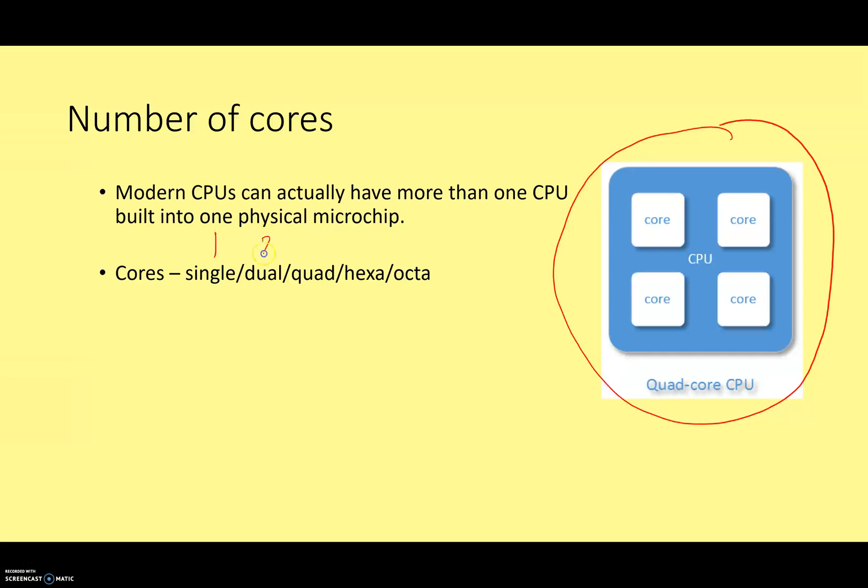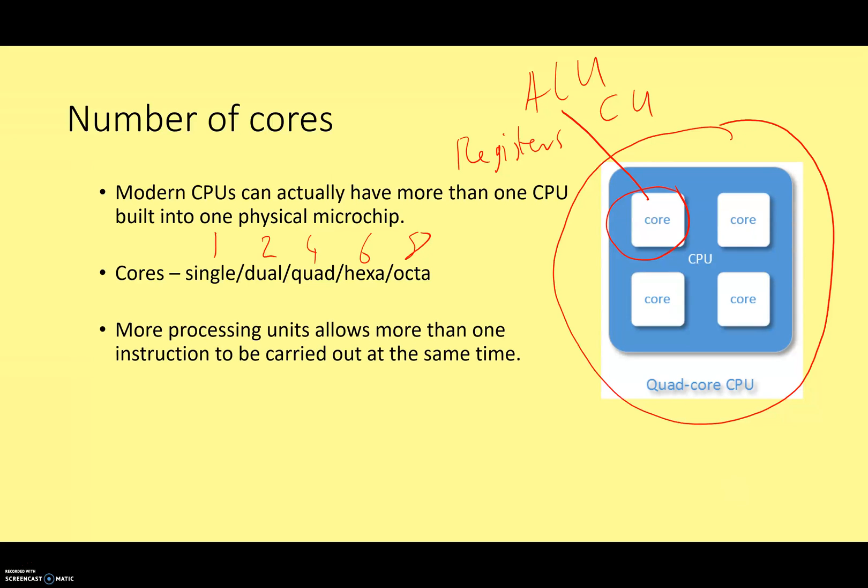And obviously that is one, two, four, six, eight cores. Each of these cores is a separate CPU in its own right, a separate processing unit. This core will have its own ALU, its own control unit, its own registers. So will the other one and the other one and the other one. They're completely separate processing units. Often they'll have their own cache, although sometimes that cache might be shared.